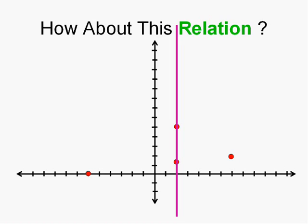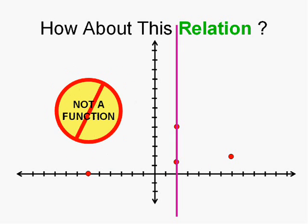So, two got mapped to two things and, of course, the vertical line hit the picture in two places at the same time. So, while this is a relation, it's not a function.